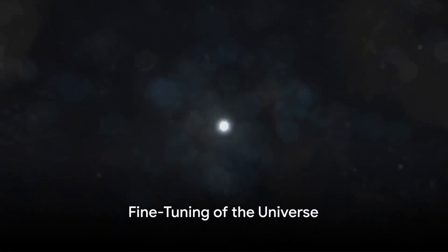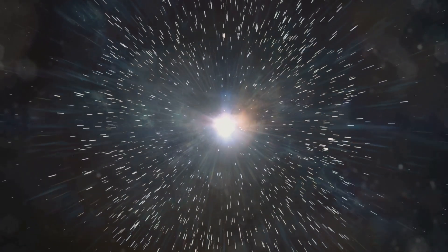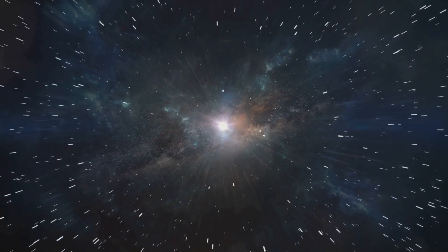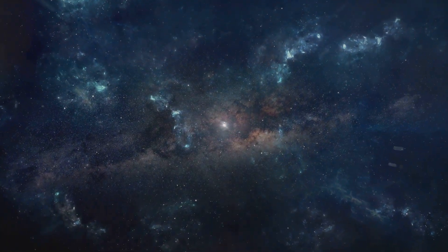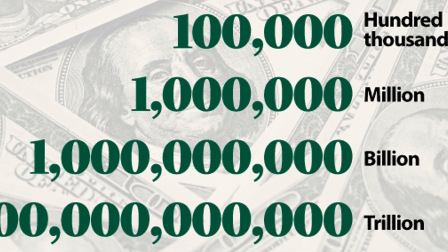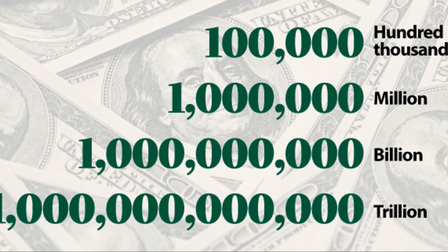However, recent scientific discoveries have begun to challenge this notion. As we've begun to unravel the precise values of the laws of nature, we've found that they must be fine-tuned to an exceedingly precise level for the universe and human life to exist. Some values are so specific that the odds of them occurring by chance are trillions and trillions to one.